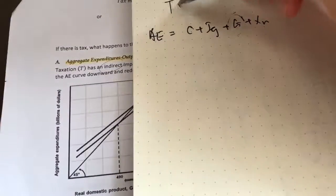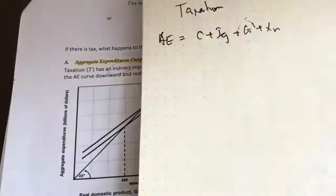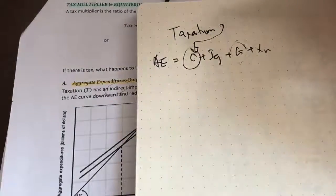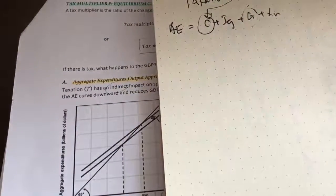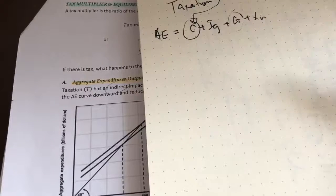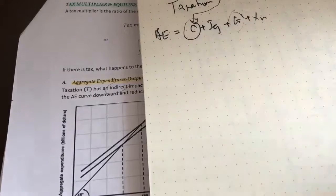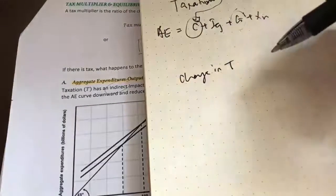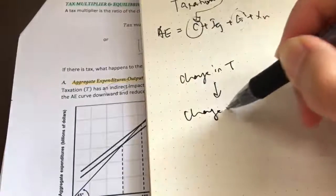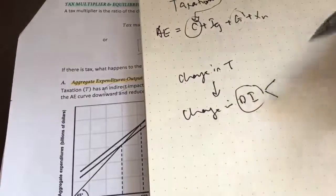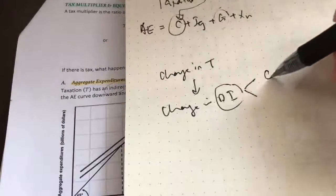Remember in topic four, when we learned about the relationship between income, consumption, and savings — taxation actually impacts disposable income. If there's a change in taxation, it will bring about a change in disposable income, which will further impact or change consumption and savings. Say taxation increases. If there's an increase in tax, what happens to disposable income? There'll be a fall in disposable income because we're paying more tax — it's a leakage. So when there's a fall in disposable income, both consumption and savings will fall.